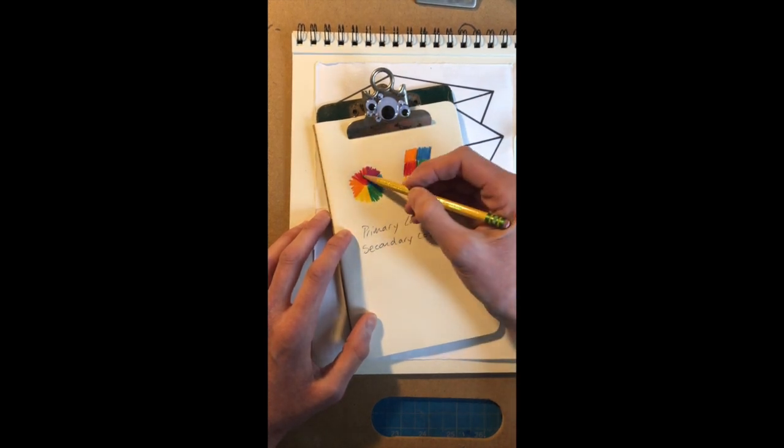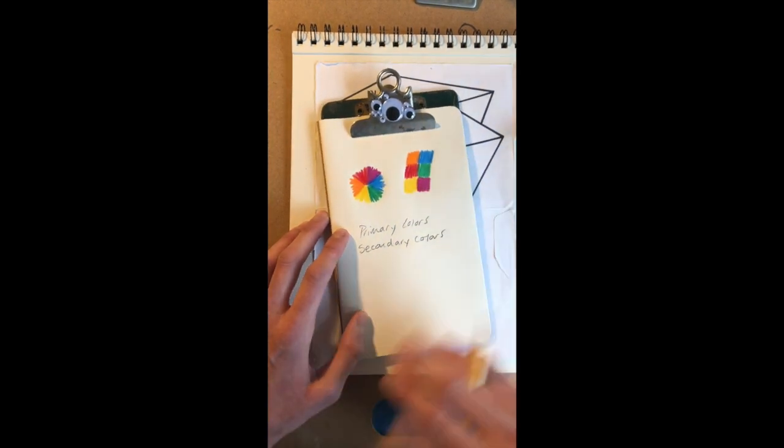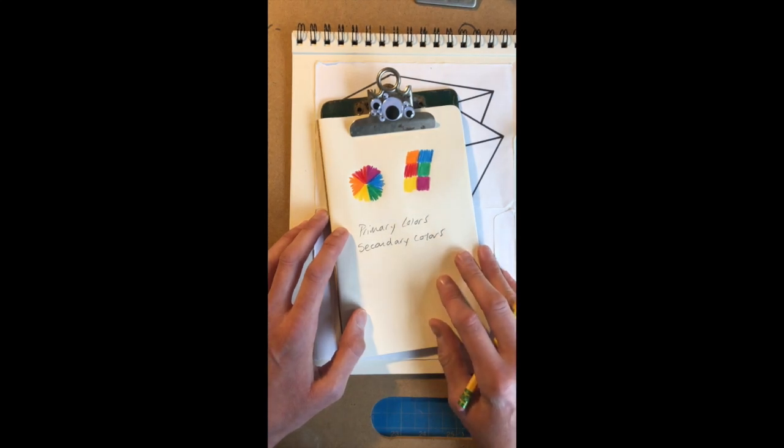And we know this because the secondary colors are between the primary colors that they are composed of. So blue and yellow make green, red and yellow make orange, and red and blue make purple or violet. Now there are some other color sets within the color wheel.